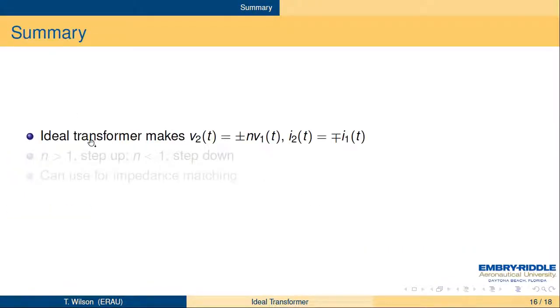So that's it. To summarize, the ideal transformer makes the output, the secondary voltage, be N times the primary voltage. If the dots are on the same side, it's plus. If the dots are on opposite sides, then it's minus. I2 is going to be minus plus 1 over N times I1(t). When N's greater than 1, it's a step up. The voltage is bigger. The current's smaller. N's less than 1, it's a step down. The voltage is smaller. The current's bigger. The product of the voltage and the current has to equal the product of the voltage and current on the secondary side. The product of the voltage and current on the secondary side has to be the negative of the product of voltage and current on the primary side, because it's a passive device. It can't produce any extra power, and we hope it doesn't absorb any power. And we saw we could use this for impedance matching.